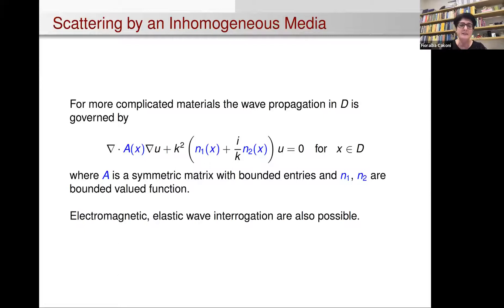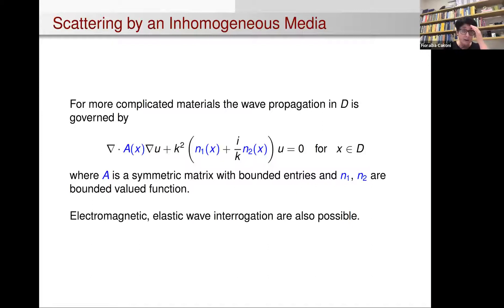When it comes to applications of these ideas, it makes sense for more complicated inhomogeneities, because for this simple situation one could use optimization methods — there is a vast literature with wonderful results to reconstruct the refractive index. However, if you have anisotropic media or more complicated structures, then reconstruction might be more challenging, and the alternative imaging technique I'm proposing could probably be used in those circumstances. One can also have in mind electromagnetic or elastic interrogations.